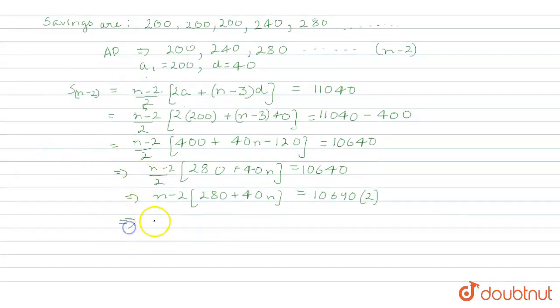We'll open the bracket and it will form a quadratic equation. The quadratic equation will come as n² - 2n + 5n - 14 equals 532.